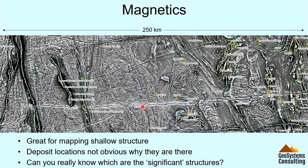Beautiful structure — just love that. It's great for mapping shallow structure. I put deposits on there, but it's not really entirely clear why the deposits are exactly there. Coming back to my question: why is Kalgoorlie here? You can see lots of structure — you can generate worms, these magnetic gradients, and there are loads of them — but it's not definitive. So we really need other datasets to help us.